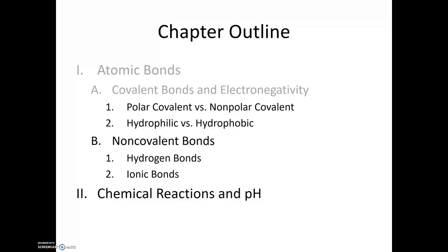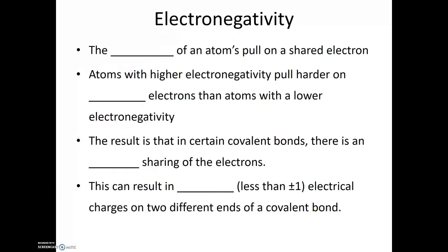Now, we can think of this sharing of a pair of electrons like a tug-of-war. In this tug-of-war, sometimes different atoms have different strengths or pulls on those shared electrons. We call that the electronegativity — this is the strength of an atom's pull on a shared electron.